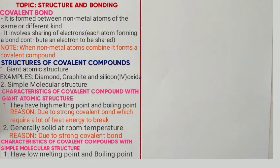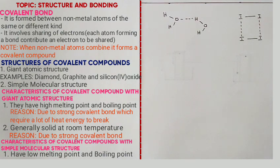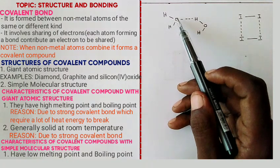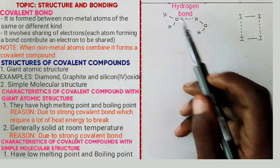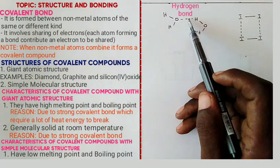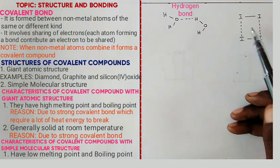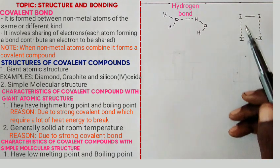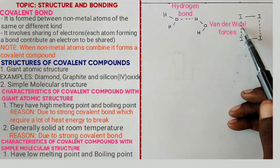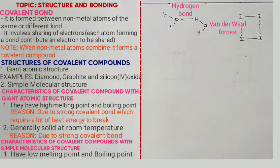Hydrogen bonds and van der Waal forces are usually shown using a dotted line. Between the oxygen atom and the hydrogen atom within a water molecule, we have covalent bonds; between one water molecule and another, we have what they call a hydrogen bond. In example two, between the iodine atom and the hydrogen atom we have covalent bonds, and between those molecules we have van der Waal forces. Those are the types of intermolecular forces of attraction.